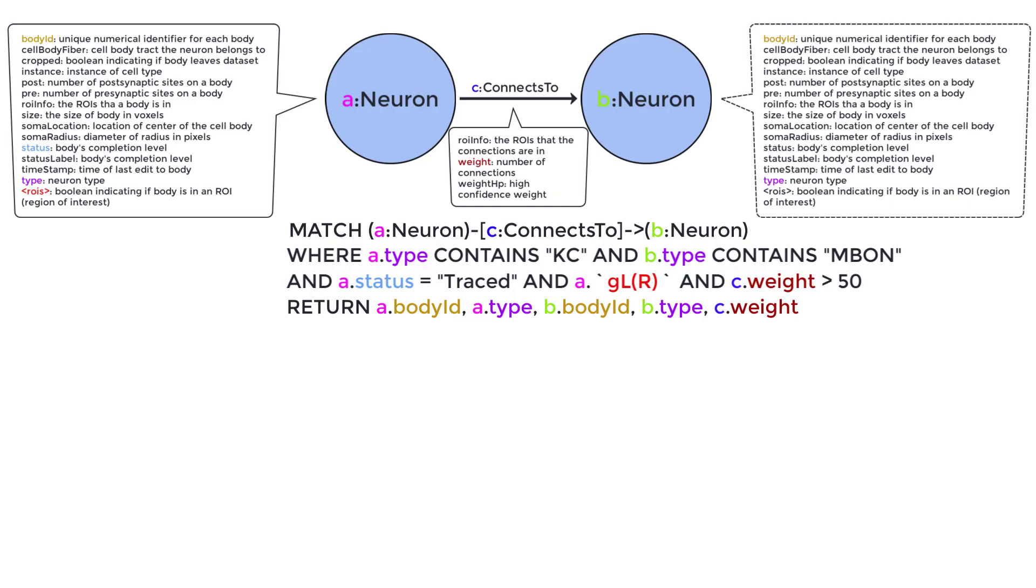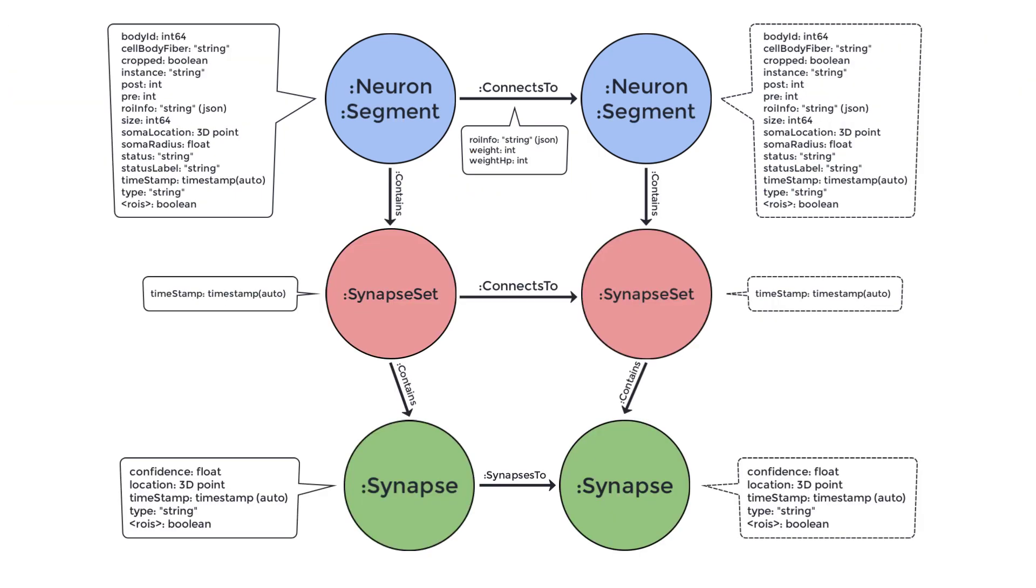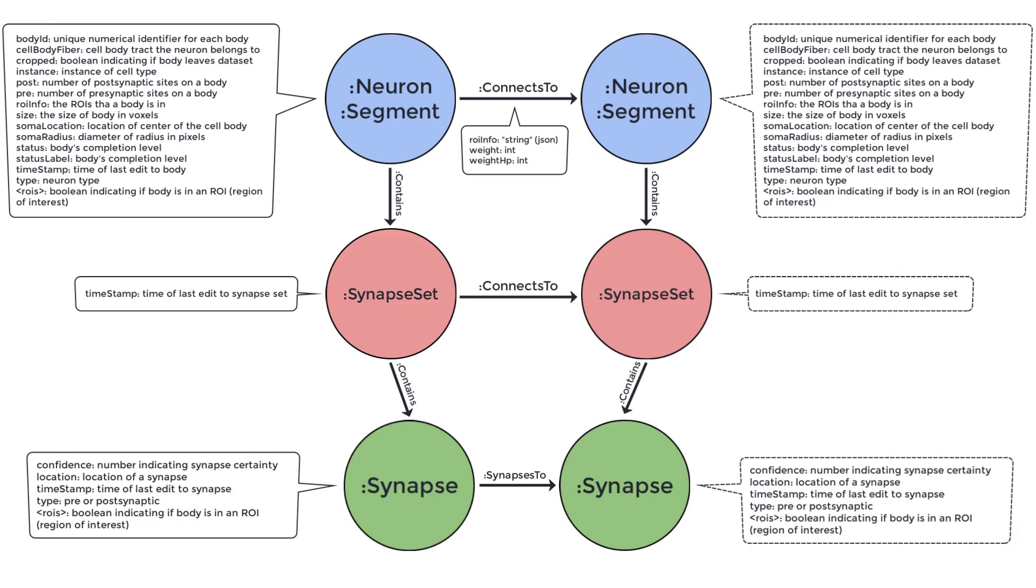We can see here that none of these properties on the nodes and relationships above will allow us to see the actual location of synapses. Let's take another look at the properties on the property graph and see if we can report synapse location. On the synapse node, we see the location property that will show us the location of a synapse. Because we want to use synapse location, because that property is on the synapse node, and because we want to report information on neuron A and connecting neuron B, that means we will have to use this pathway in our match statement.